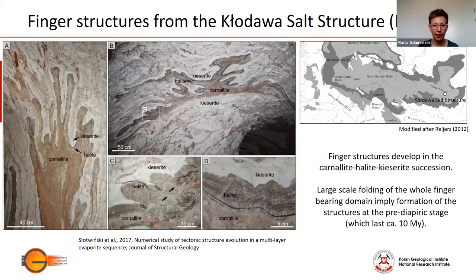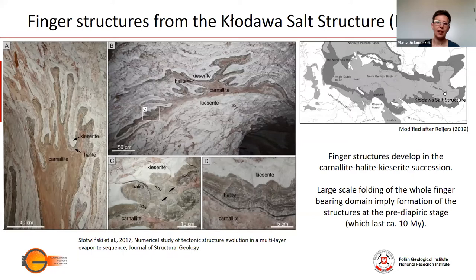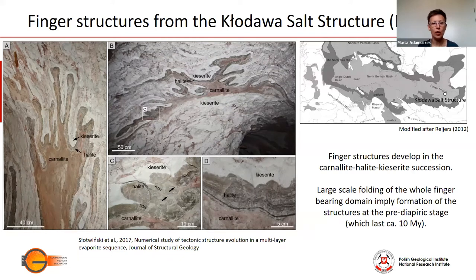Formation of the finger structures probably took place during the early pre-diapyric stage of the Khodawa salt structure formation, when the layers were approximately horizontal. Large-scale deformation, probably related with the formation of the diapir, led to folding of the whole sequence, which led to the development of the fan-like display of the fingers that we observe in the mine. The phase between the deposition and the initiation of the diapyric rise lasted approximately 10 million years.